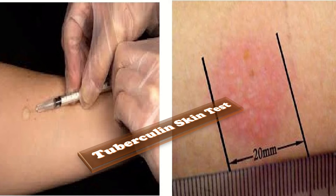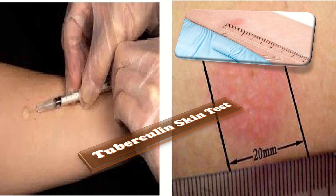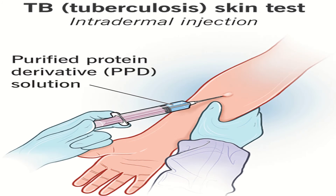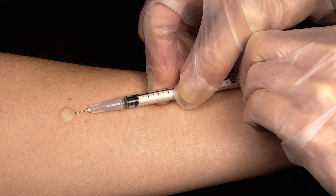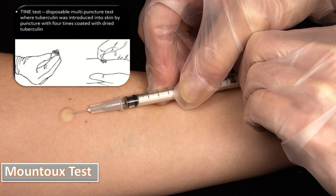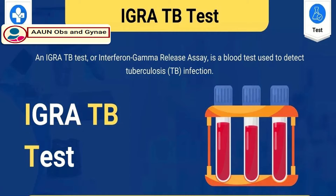The delayed hypersensitivity reaction is measured between 48 to 72 hours. Pregnancy does not alter the outcome of the result, as the purified protein derivative is not infectious and can be safely administered to both mothers and babies. There are two types of tuberculin test: the Tyne test and the Mantoux test. The Tyne test is rarely used; the Mantoux test is most frequently performed.